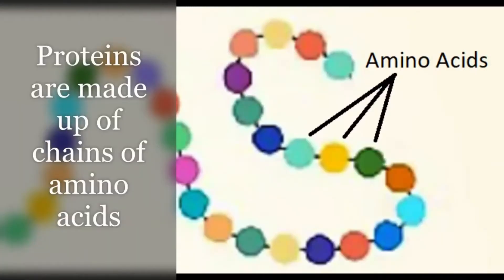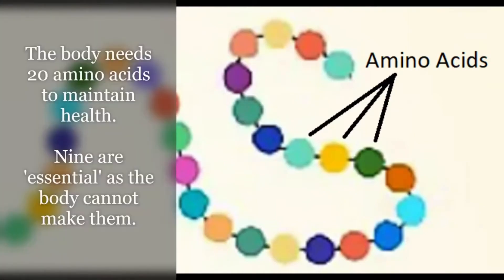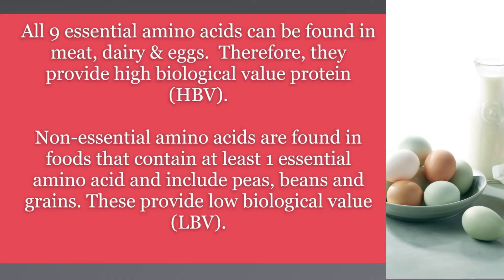Proteins are made up of chains of amino acids joined by bonds. The body needs 20 amino acids, but cannot make certain ones — these are called essential amino acids. A child needs nine essential amino acids and an adult needs eight. All nine essential amino acids can be found in products such as meat, dairy, eggs, soya, and quinoa, and therefore they provide high biological value protein, or HBV.